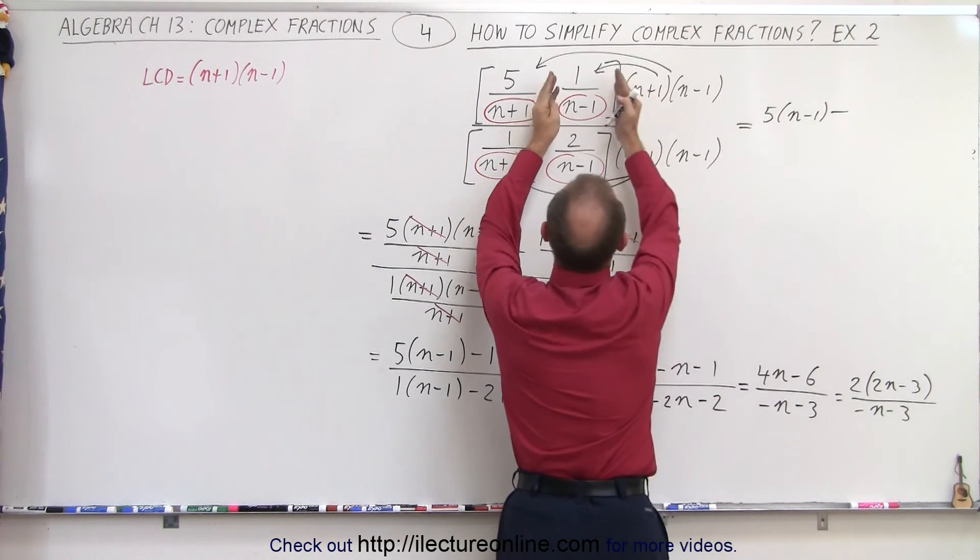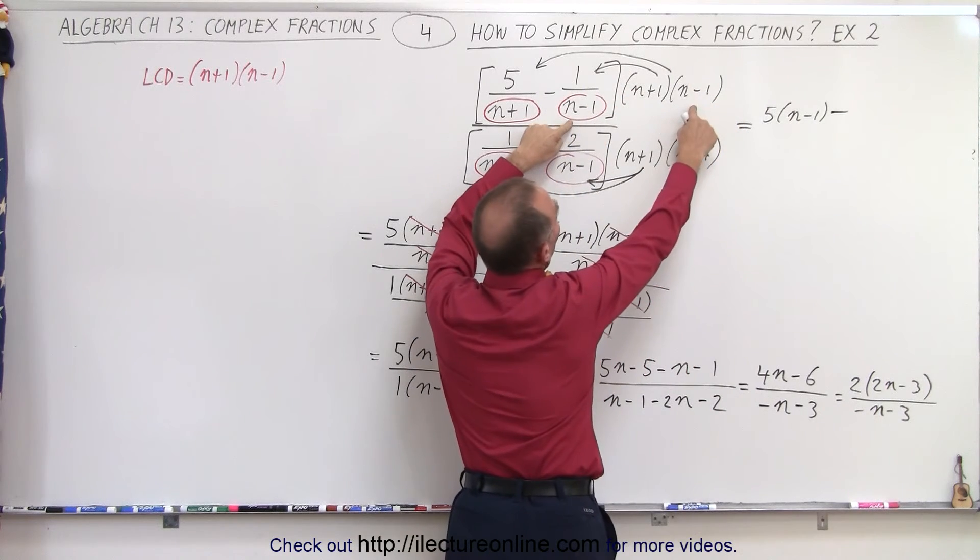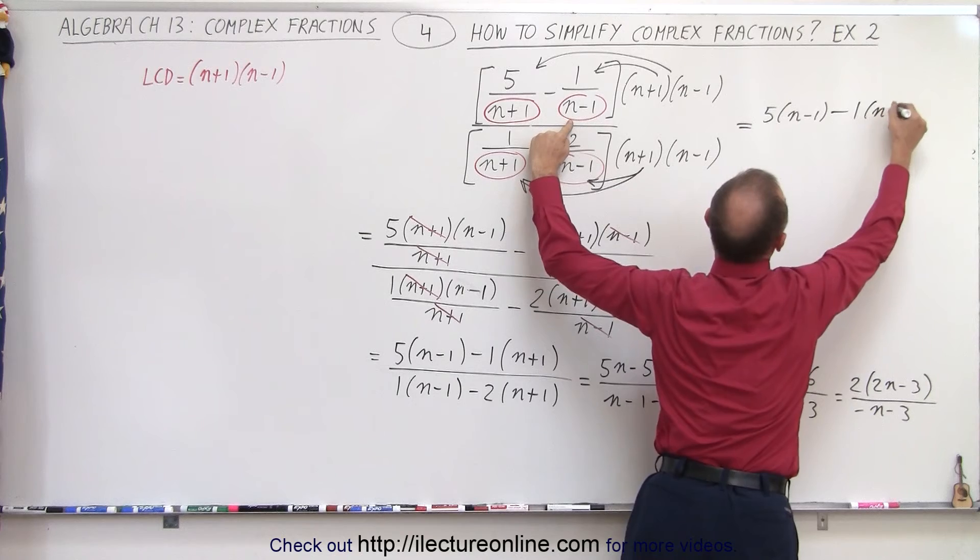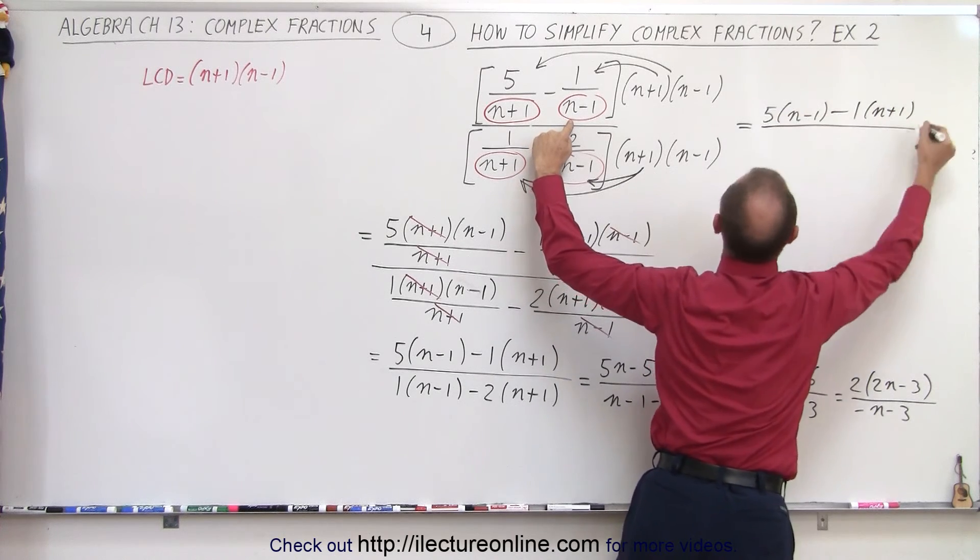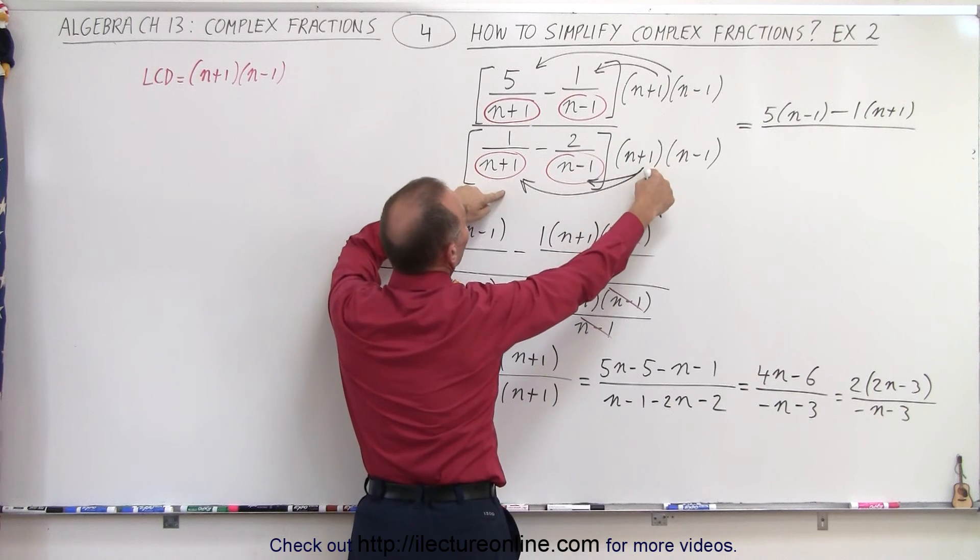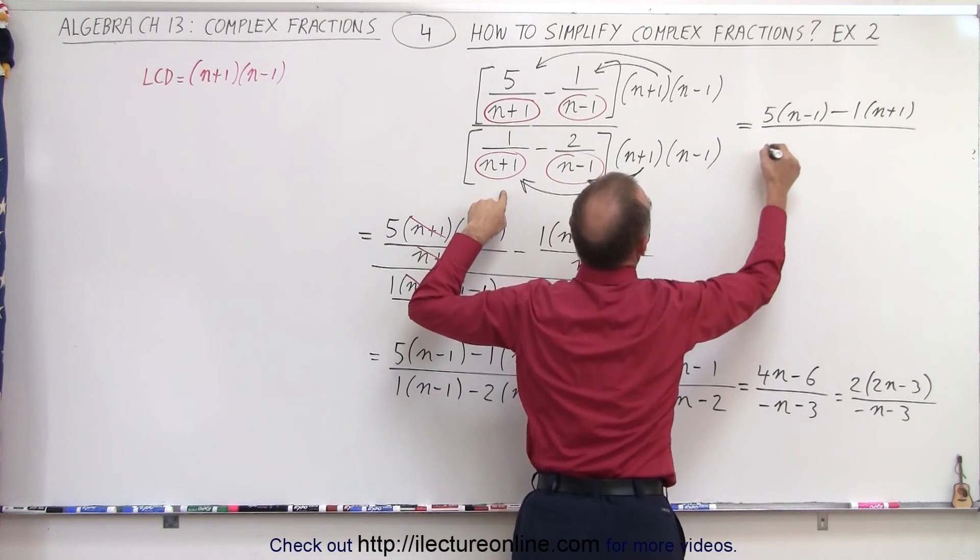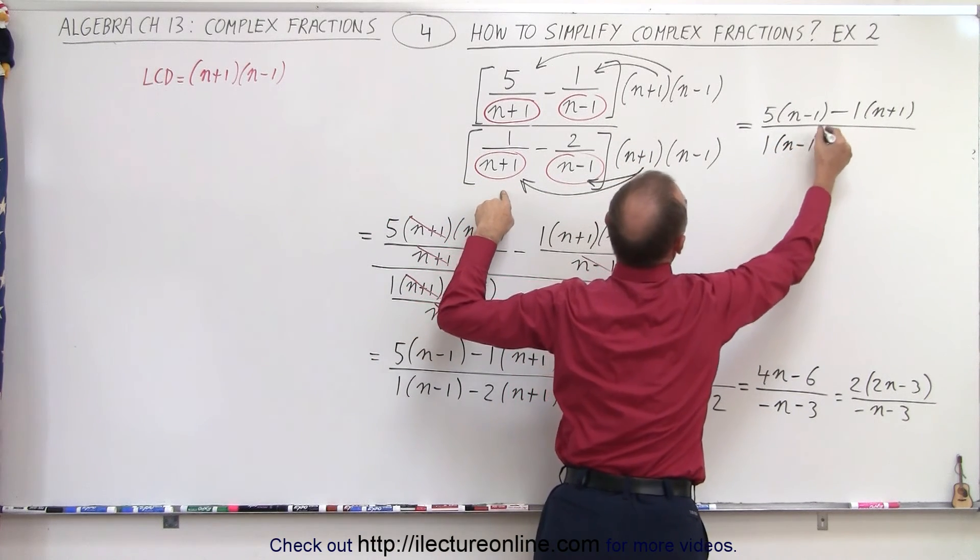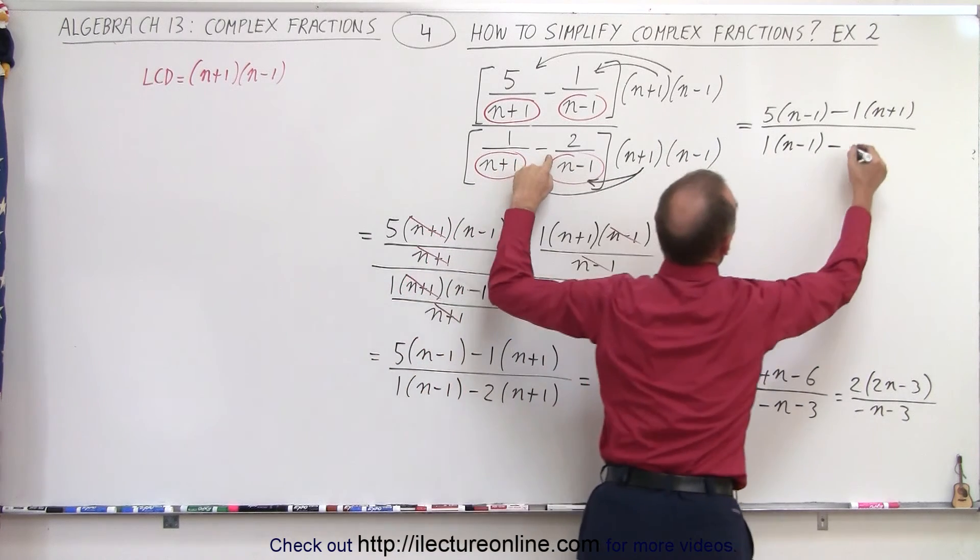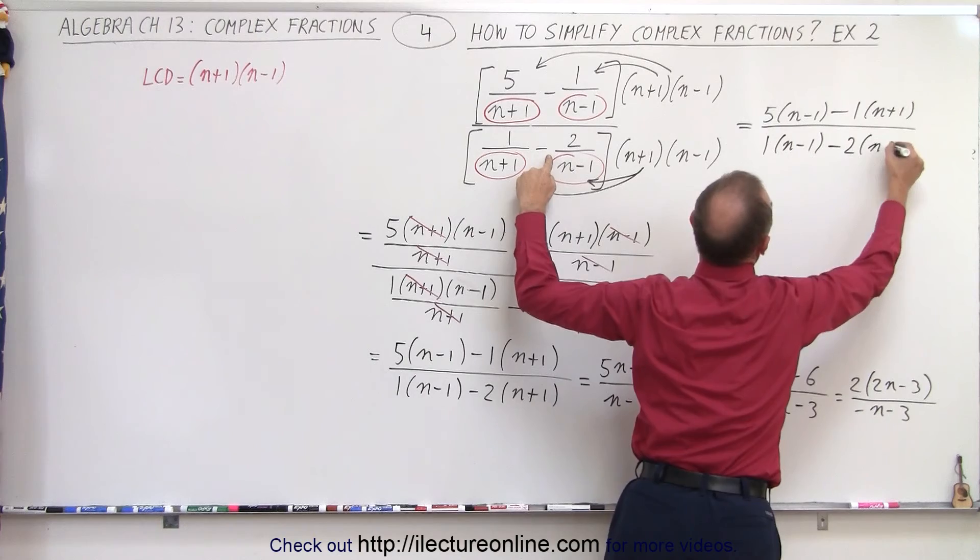Minus, here we multiply this times this, the n minus 1s cancel out, and we're left with 1 times n plus 1. Divided by, here, notice we multiply this times this, the n plus 1s cancel out, and we're left with 1 times n minus 1. And here, the n minus 1s cancel out, and we're left with minus 2 times n plus 1.